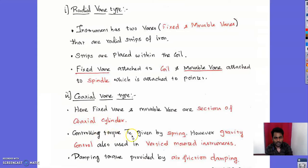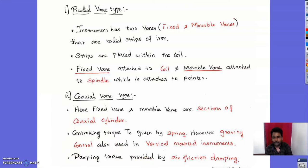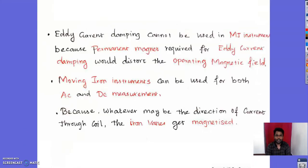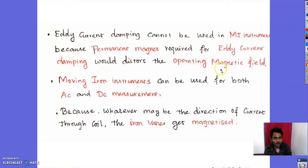The controlling torque is produced by a spring; however, gravity control is also used in vertically mounted instruments. The damping torque is provided by air friction damping. Eddy current damping cannot be used in MI instruments because the permanent magnet required for eddy current damping would distort the operating magnetic field, making it unsuitable for MI instruments.